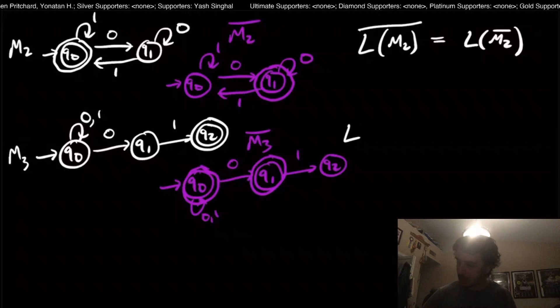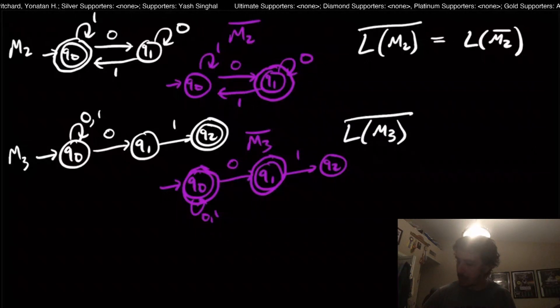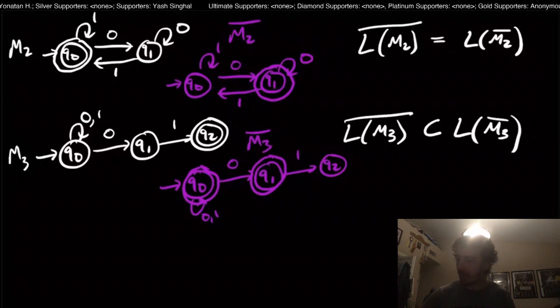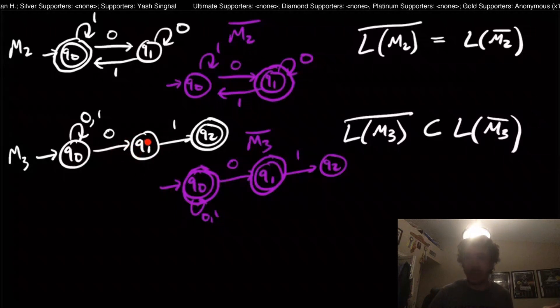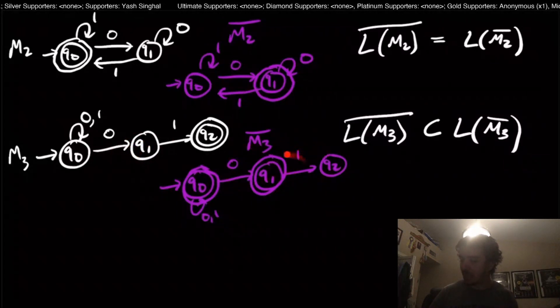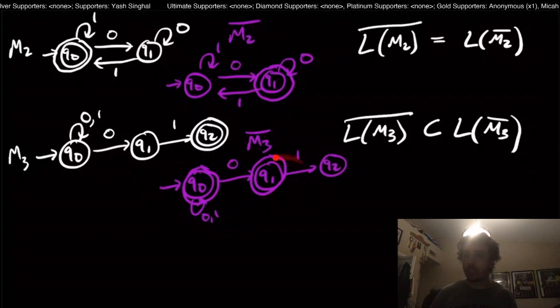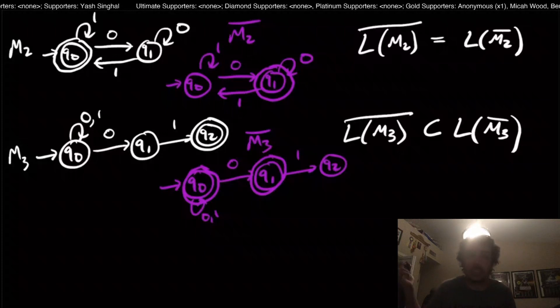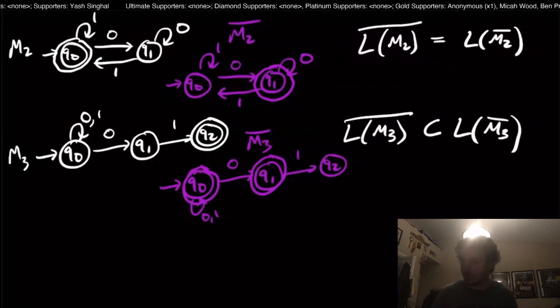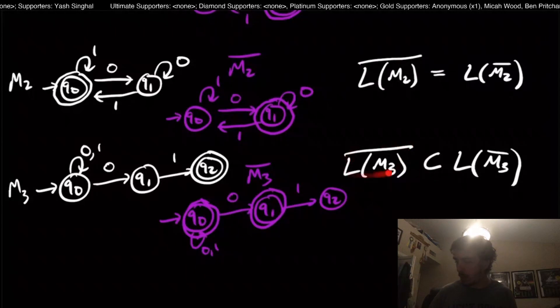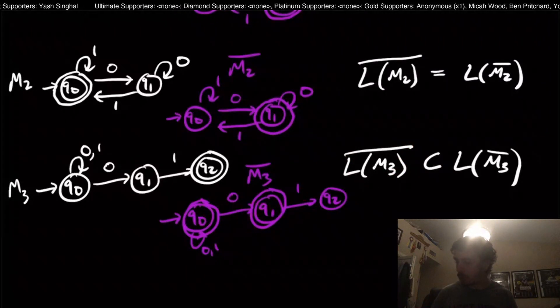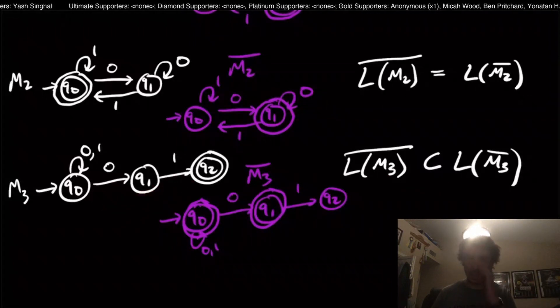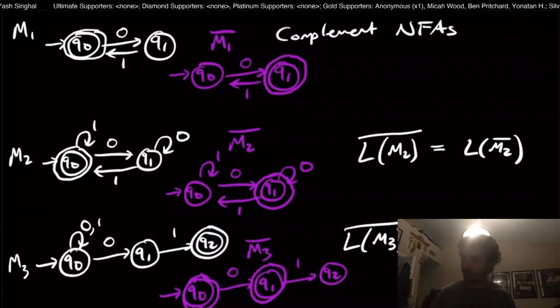What does this actually tell us? It tells us that this machine actually accepts more strings than what the complement should get. This tells us that the complement of M3 is strictly contained within the machine that we actually made. The complement of this thing, which shouldn't have all strings, is a subset of this one which does have all strings. In fact, this tells us that the complement operation just doesn't work all the time with NFAs. But you may be thinking, is the machine that we produce always going to be a superset of the actual complement that we really need? It turns out that that's not the case either.